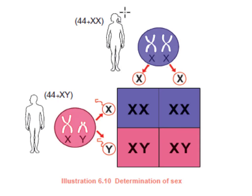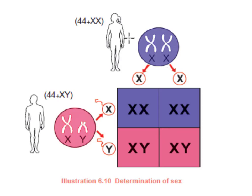The female genetic makeup consists of a total of 46 chromosomes, that means 23 pairs. Out of these, 44 are somatic chromosomes, which are identical. The remaining two are the XX sex chromosomes — these are the female sex chromosomes.